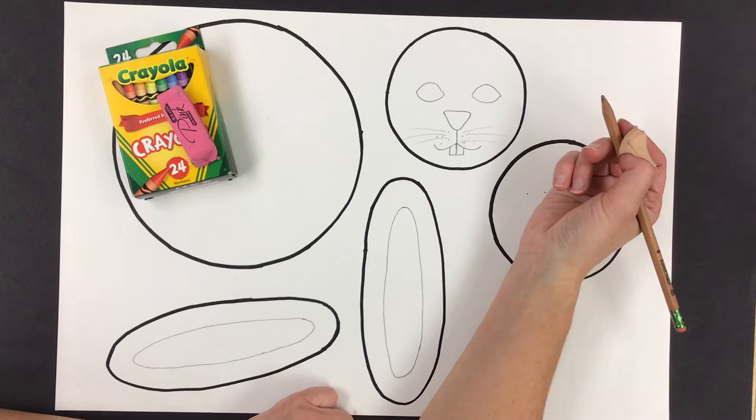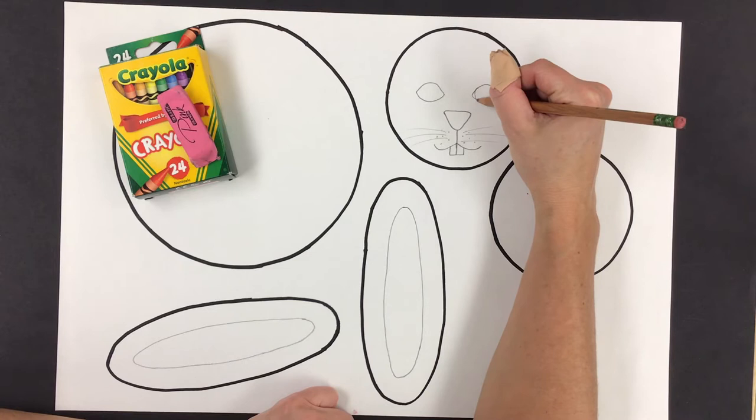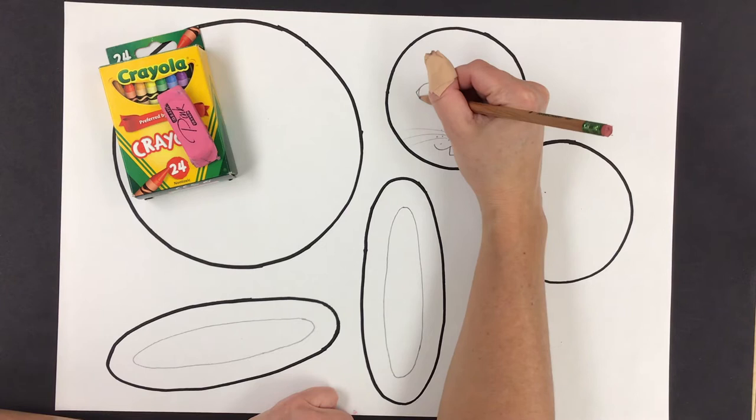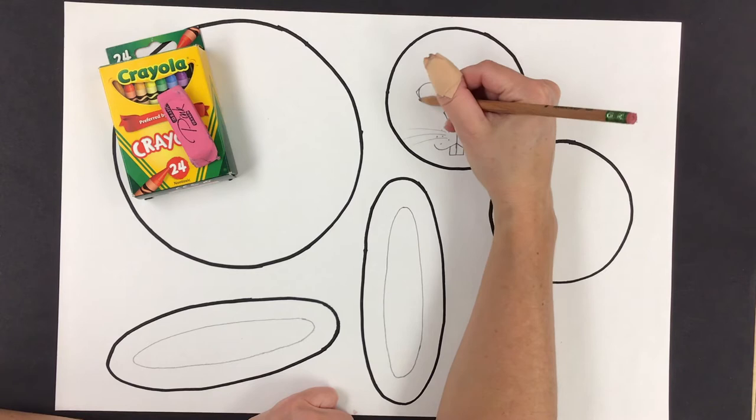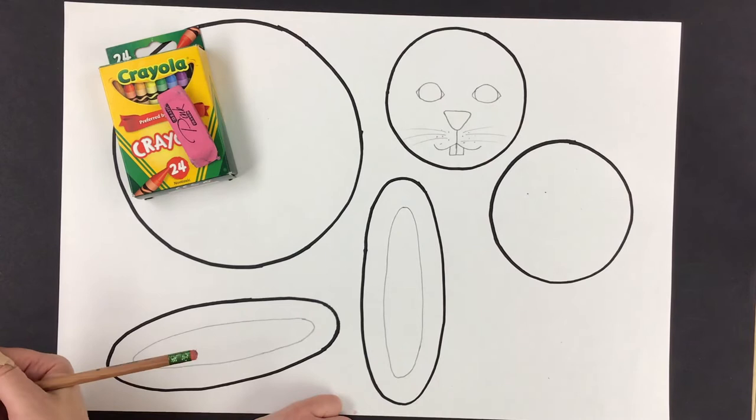And the iris, the colored in part of a rabbit's eye, is very big. Some rabbits have brown, some are blue or green, and some are even red. I think of it like a marble circle inside. And only a little on the edges is showing, and that's what I'll leave white.